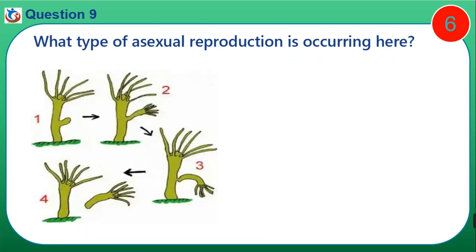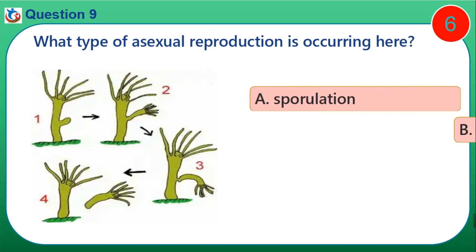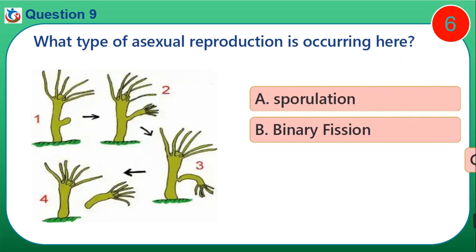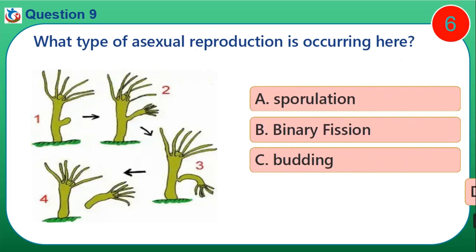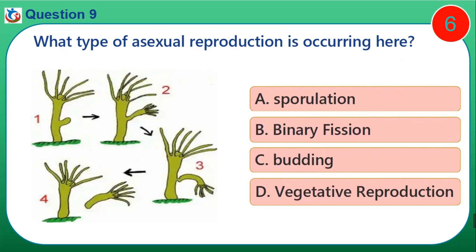Question 9. What type of asexual reproduction is occurring here? A. Sporulation. B. Binary fission. C. Budding. D. Vegetative reproduction.